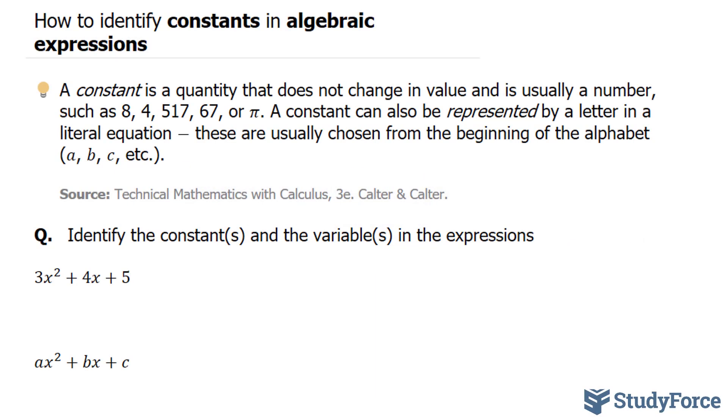In this lesson, I'll show you four examples on how to identify constants in an algebraic expression. A constant is a quantity that does not change in value and is usually a number such as the ones you see on your screen. A constant can also be represented by a letter in a literal equation. These are usually chosen from the beginning of the alphabet.